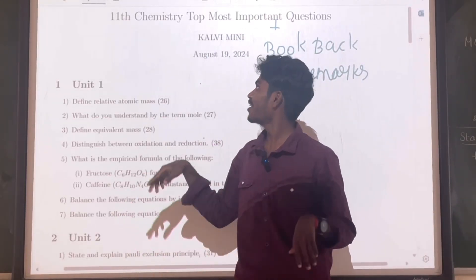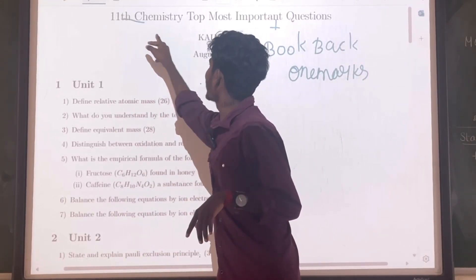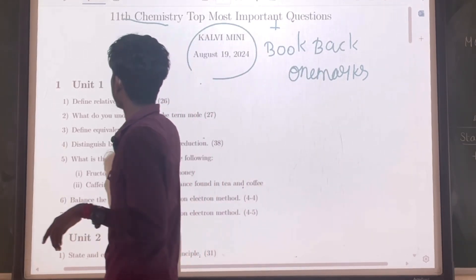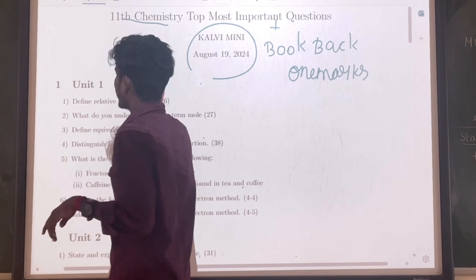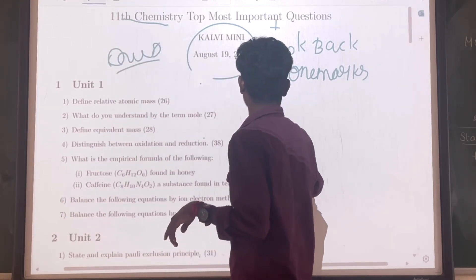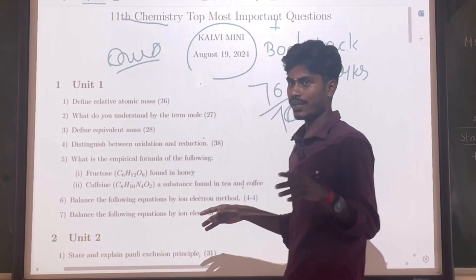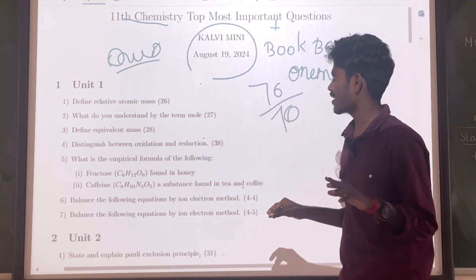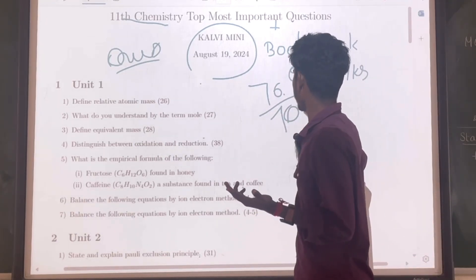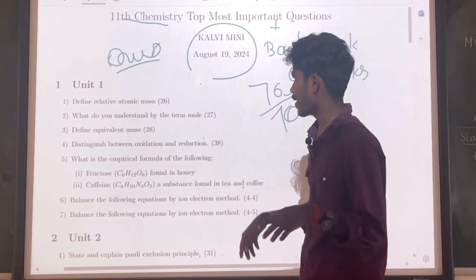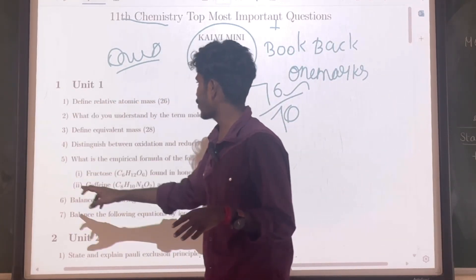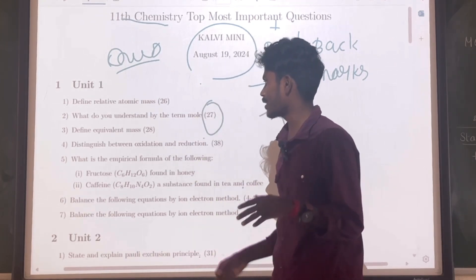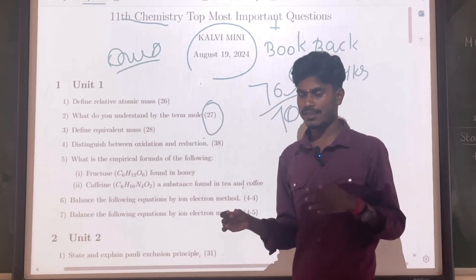Hi everyone, welcome to my channel. In this video, we will look at the top most important questions for quarterly examination in 2024. The quarterly examination is 70 out of 70. You can learn important questions plus book back one word. English medium students will look at the question number; Tamil medium students will have a question number in brackets, so look at the question number and mark them.